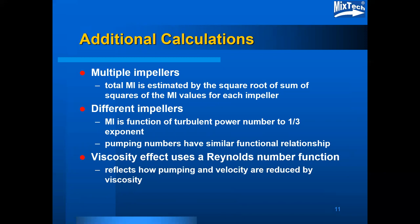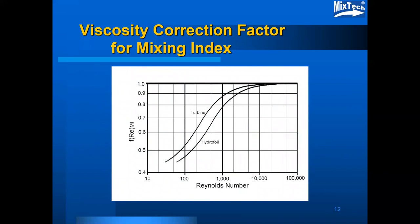The viscosity effects use a Reynolds number function reflecting how the pumping and velocity are reduced by viscosity. This pair of curves shows, as a function of Reynolds number, the type of corrections that are involved. The upper curve represents turbine impellers — those with power numbers equal to or greater than one. The lower curve is representative of hydrofoil impellers or impellers with power numbers less than or equal to one. The Reynolds number effect does not begin until you get out of the turbulent range and below a Reynolds number of about 20,000.